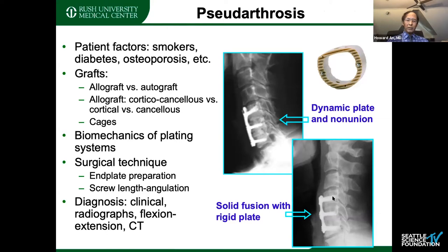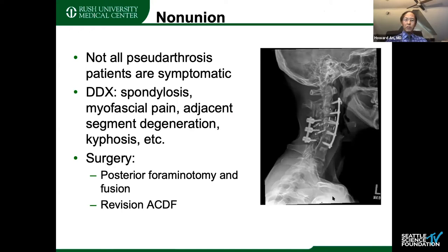I could give you a lot of cases like that, but I'm going to talk about pseudoarthrosis first. There are many factors — patient factors, biomechanical factors, surgical techniques — but I want to say that not all pseudoarthrosis are symptomatic. There are little hairline pseudoarthroses, because pseudoarthrosis comes in different types: obvious loosening like you can see in this case, but some cases may have some mild neck pain that's not very symptomatic, or symptoms are very minimal and don't require another surgery.